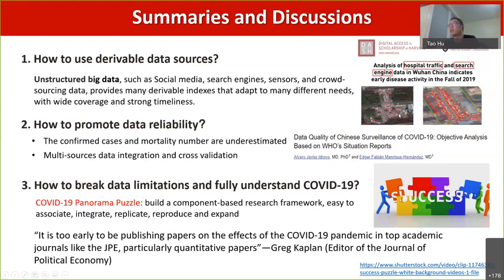Here's an example — a publication from Harvard University. This research analyzes hospital traffic and search engine data in Wuhan, China, to indicate early disease activity. However, this research has several shortcomings. One of the most important is that the estimated hospital traffic is based on seven remote sensing images that detect cars on the ground.